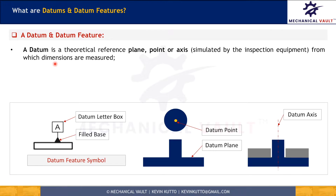Let's begin with a simple definition of datum. A datum is a theoretical reference plane, point, or axis from which dimensions are measured. Datum planes, points, or axes are simulated by using inspection equipment, but the datum is shown on the engineering drawing by using a datum feature symbol, as shown here.